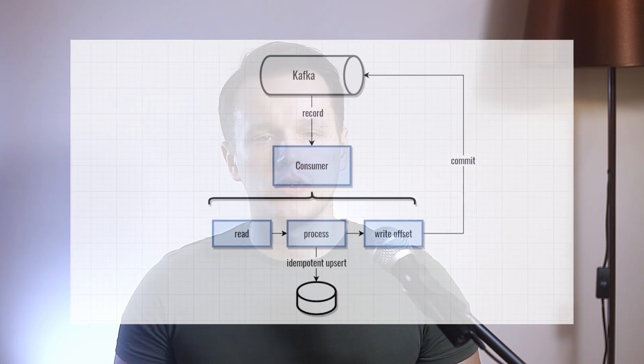Today we have discussed delivery semantics in the distributed world. We also observed how each semantic is implemented in Apache Kafka and discussed possible caveats. It was Aleksandr Sergienko and I hope that this video was helpful. Like, share and subscribe. Goodbye for now — I'll see you in the next video.